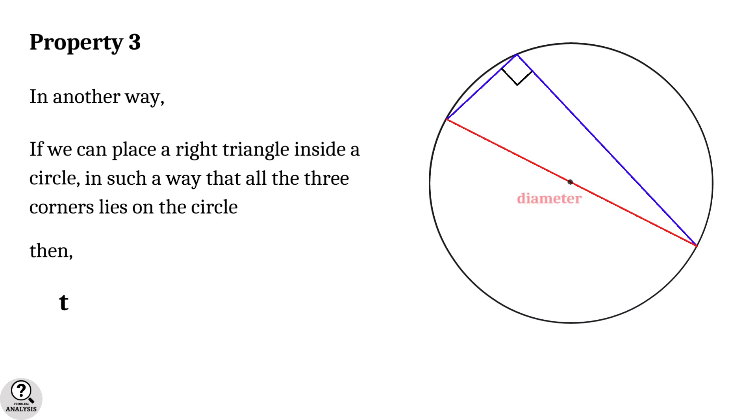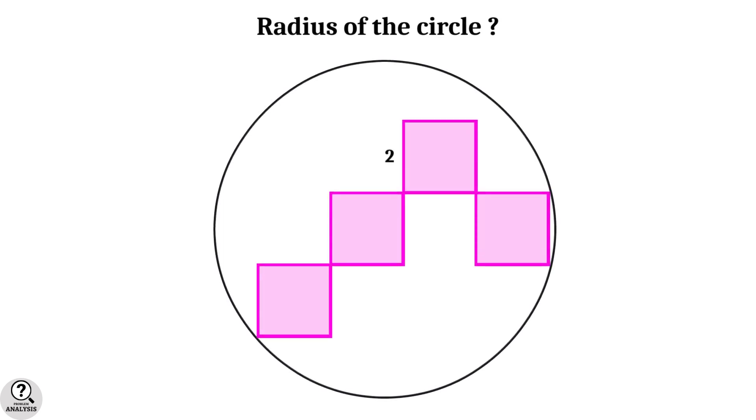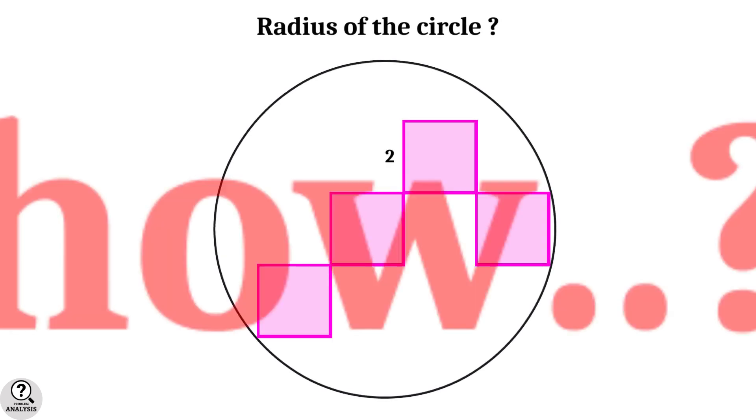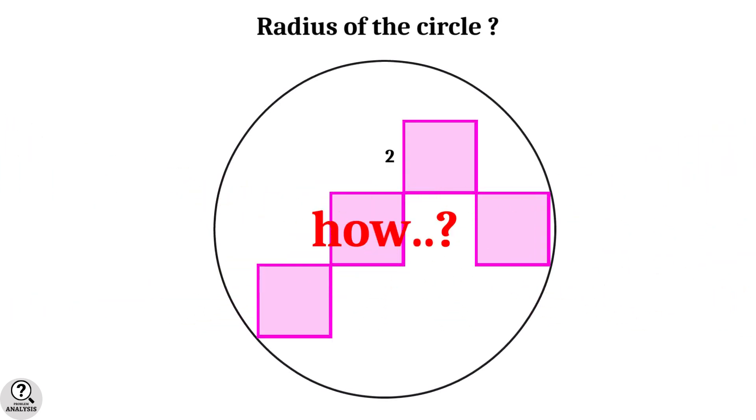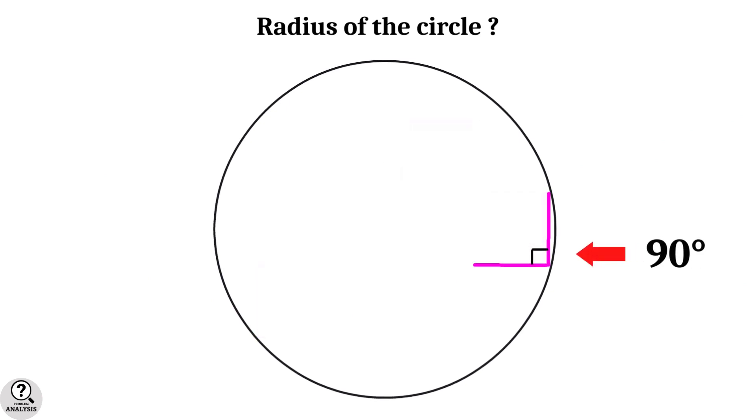Coming back to the problem, do you have any idea how we can find the radius? If you observe in detail, here we can see a 90-degree angle with the corner lying on the circle. Therefore, by property 3, if we construct a right triangle using this 90-degree angle, then its hypotenuse will be a diameter.